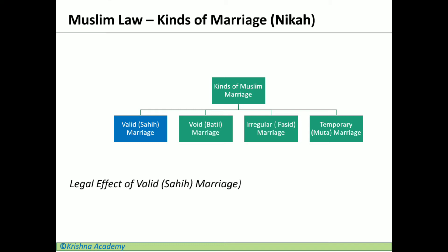Under all schools of Muslim law, a valid marriage is one where all basic requirements have been fulfilled — competency of the parties, free consent, offer and acceptance, and there should be no prohibition to such marriages. Where all these elements are present, such marriages are called valid marriage or sahih marriage.